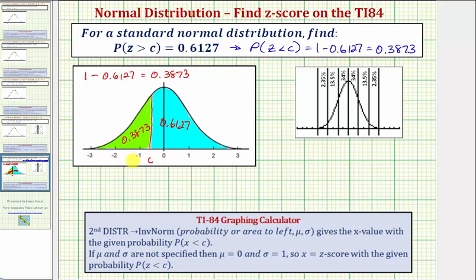Now we can find the value of c using the inverse norm function on the TI-84 graphing calculator. We'll enter the probability or area to the left, followed by mu, the mean, and sigma, the standard deviation. This returns the x value with the given probability. But we're looking for a z-score, so if we let mu equal zero and sigma equal one, the x value will be the z-score with the given probability of z being less than c.